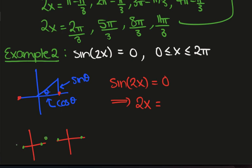So remember this is 0, pi, 2 pi, 3 pi and 4 pi. So what we see is that 2x is going to be 0, then pi, then 2 pi, 3 pi and 4 pi.